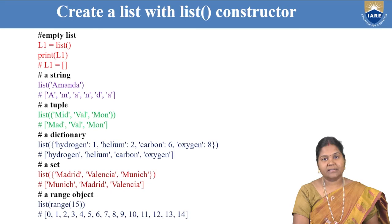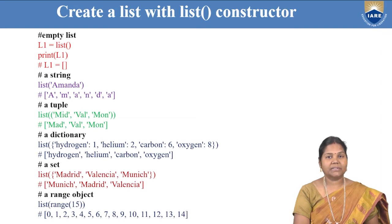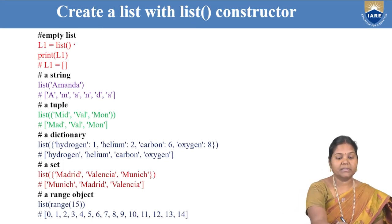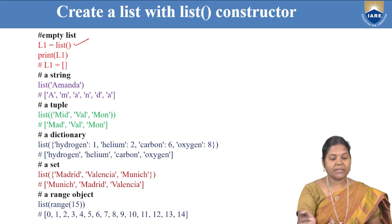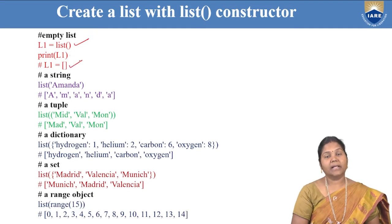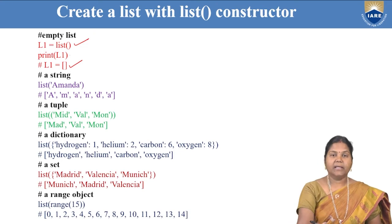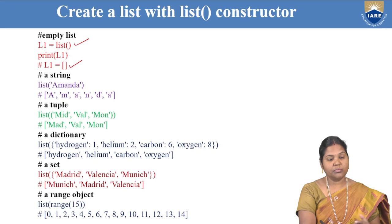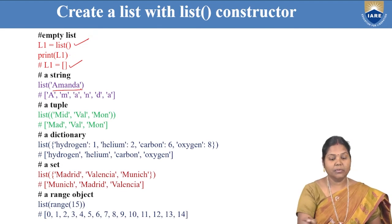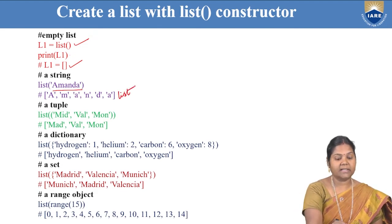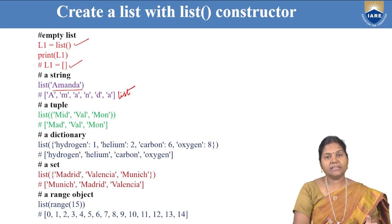A list can be created using square brackets, but lists can also be created using the list() method or constructor. To create an empty list, write list() — just open the bracket and close it. If you want to create a list from a string, pass the string to the list constructor. For example, passing 'amanda' creates a list of individual characters. So converting a string to a list is possible with the list() method.